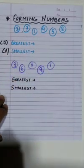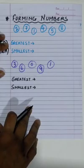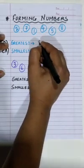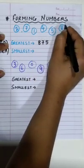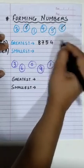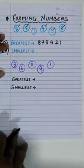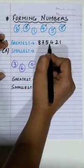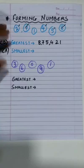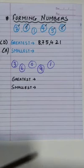Let's start. Greatest number — which is the biggest digit out of these? Yes, 8. So we will write 8 first, then 7, then 5, then 4, then 2, and then in the end 1. Let's put commas to know what number we have formed: the greatest possible number out of these digits will be 8,75,421.